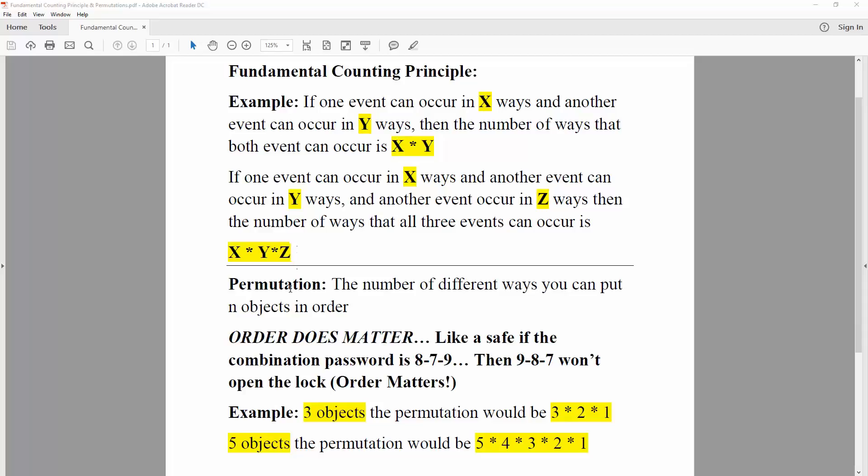And now for permutations. The number of different ways you can put n objects in order. For permutation, order does matter. For example, if we have a safe and the combination password is 879, then 987 won't open the lock. Order matters.